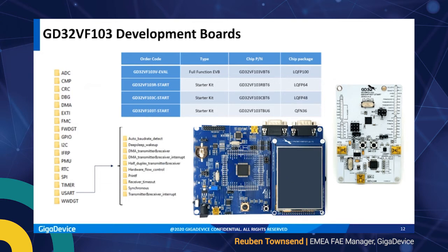GigDevice offers evaluation boards which include a display, connectors, and additional system resources such as potentiometers, LEDs, switches, external flash memories, and crystals. There is also a starter kit which is a more basic board — typically the MCU with IOs brought out. Both boards include the debug probe, which is the in-house GD-Link, allowing for programming and debugging of the MCU.